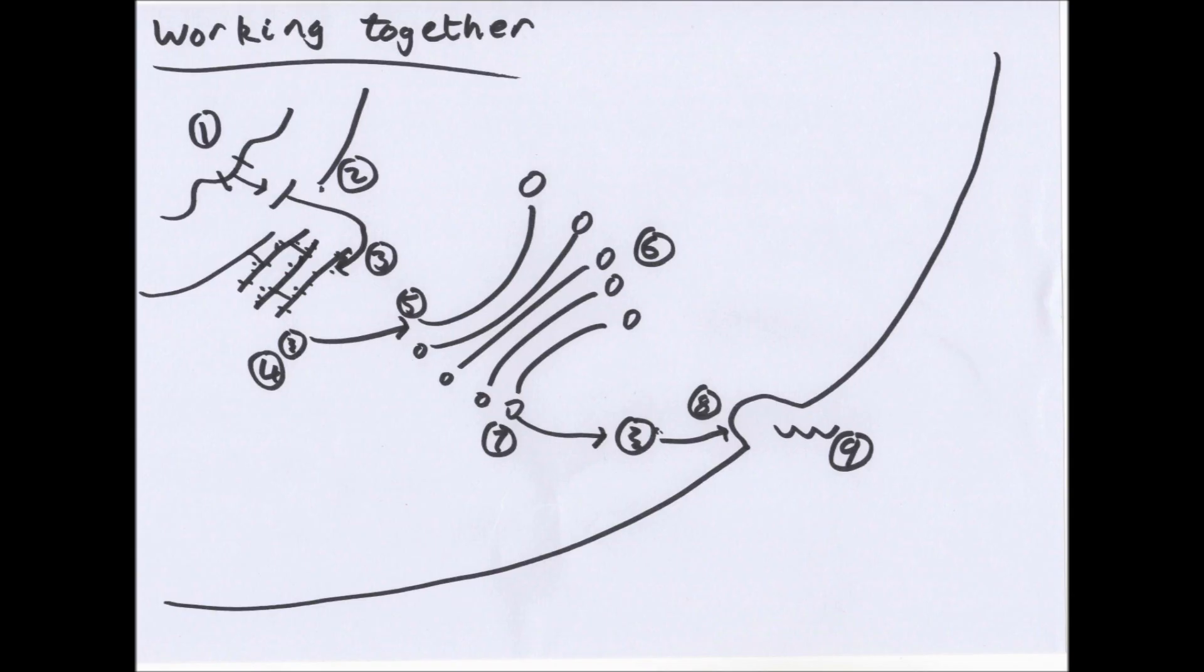Insulin will be created at number 4, and then a vesicle will bud off or pinch off and fuse with a Golgi apparatus at the forming phase. The Golgi apparatus at 6 will then package and process insulin molecules ready for release, and then a vesicle will bud off again at 7 and will move towards the cell surface membrane. At 8 it will bind to the cell surface membrane and will release the molecule by exocytosis, which we'll learn about in a bit, and at 9 you've got the molecule insulin. So this would happen a lot in the pancreatic cells, in particular beta cells if you're doing A2.